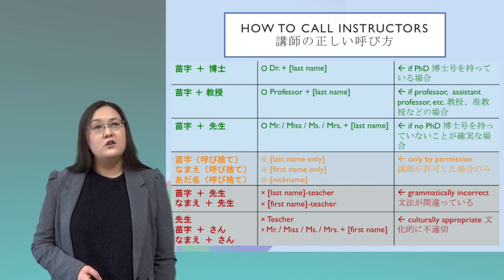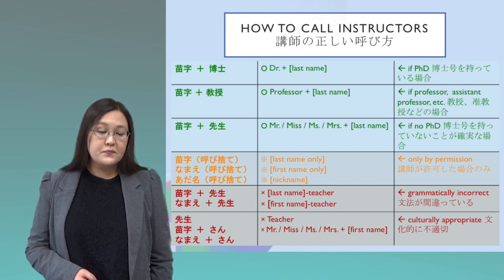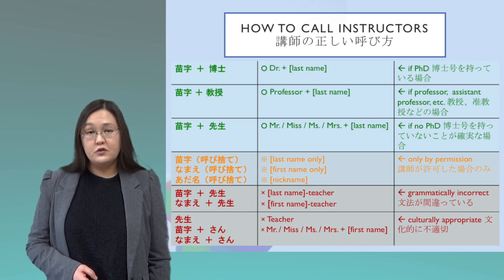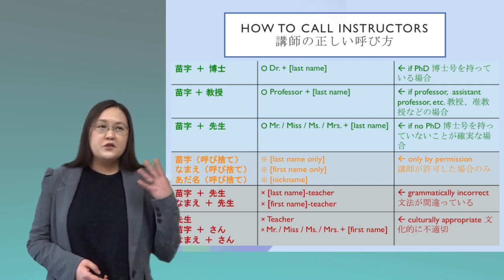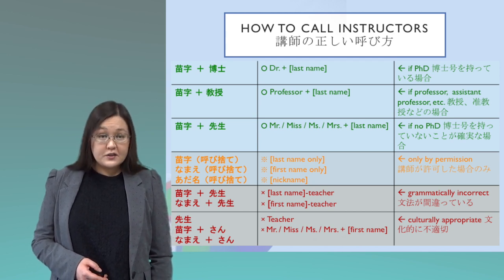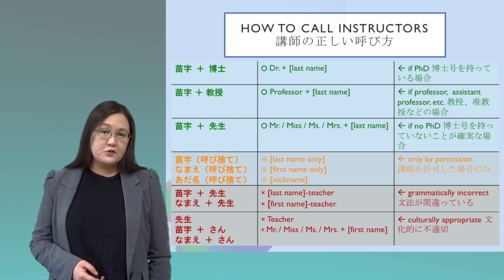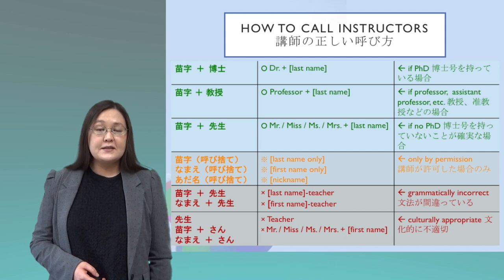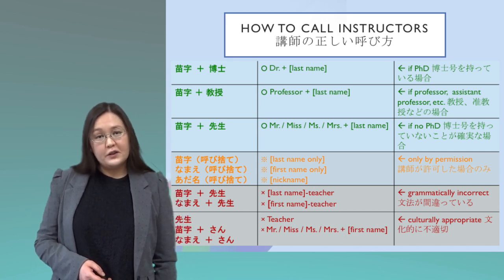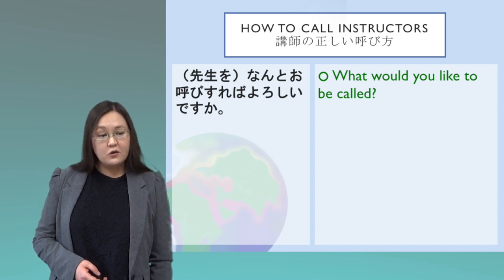In Japanese you can say sensei by itself, but in English we don't do that for university instructors — maybe in kindergarten or elementary school a student will say 'teacher,' but not for university instructors. Also, we don't use 'Mister' plus first name or 'Miss' plus first name for university instructors. So please use 'Doctor' plus last name or 'Professor' plus last name. If you're sure the person does not have a PhD, you can use Mr., Miss, or Mrs. If you have received permission, you may use first name only, last name only, or a nickname — but please don't do that unless you have permission. When in doubt, ask: 'What would you like to be called?'